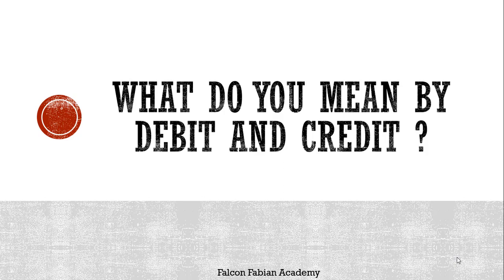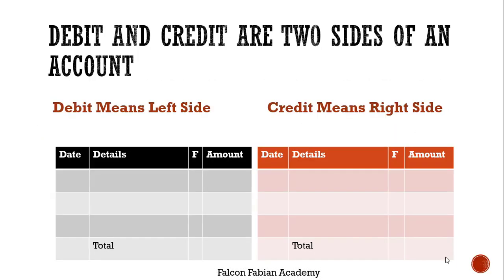These are very important terms. Do not get confused by the meaning of these terms in accounting versus their meaning in English. So let's understand this. In accounting, a lot of formats are created, and one of them is an account. So this is what an account looks like. Debit and credit are two sides of this account.